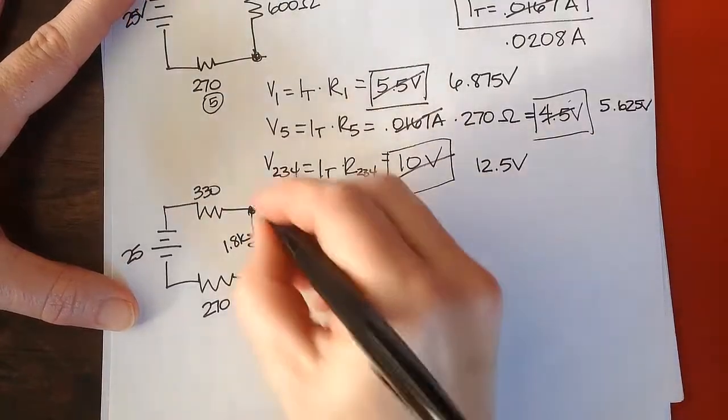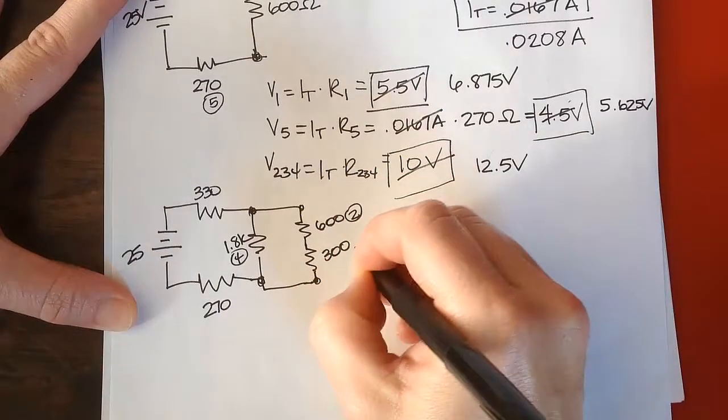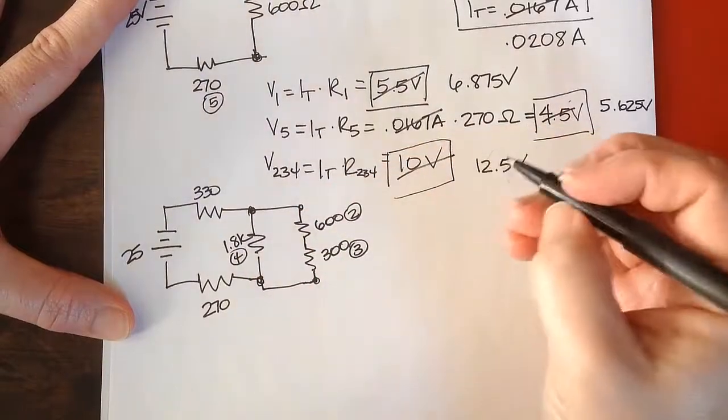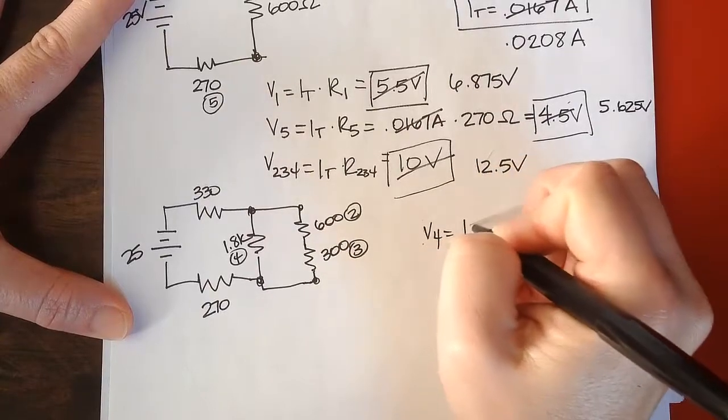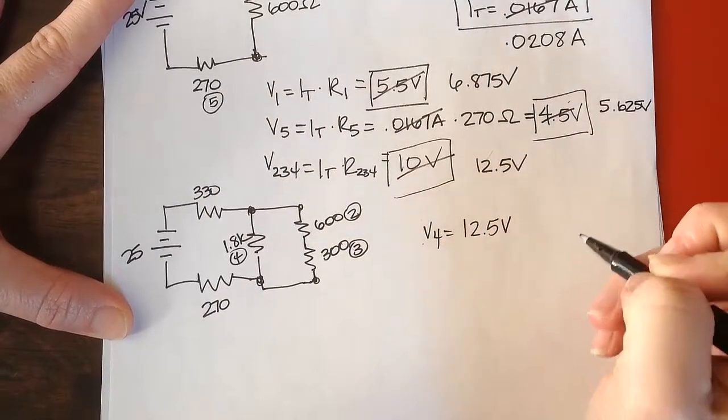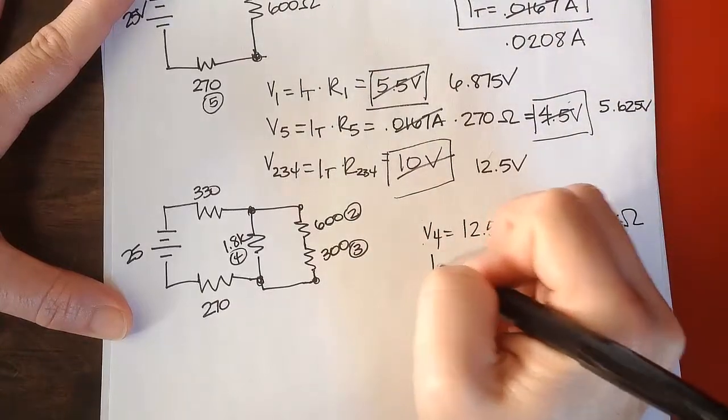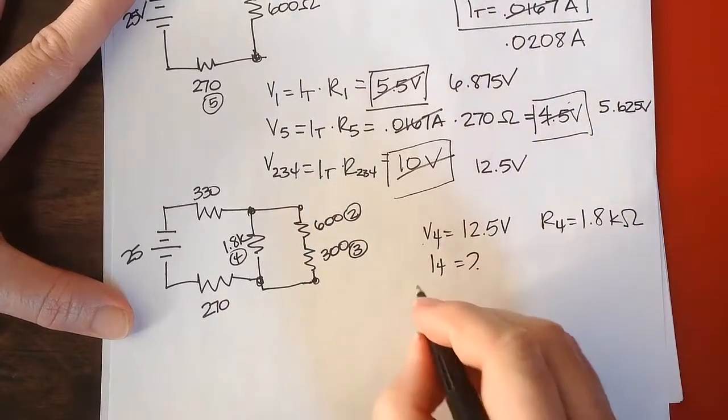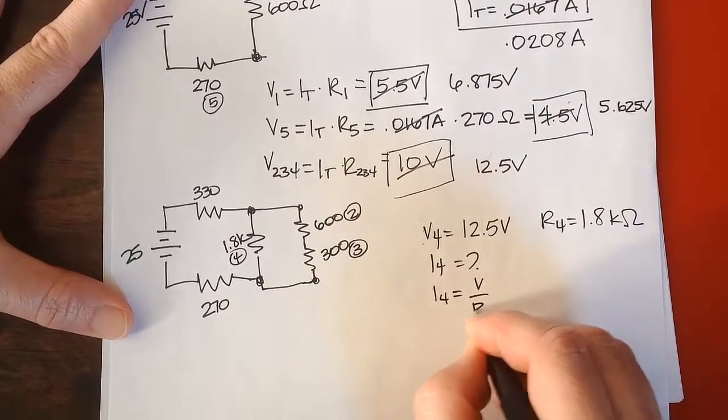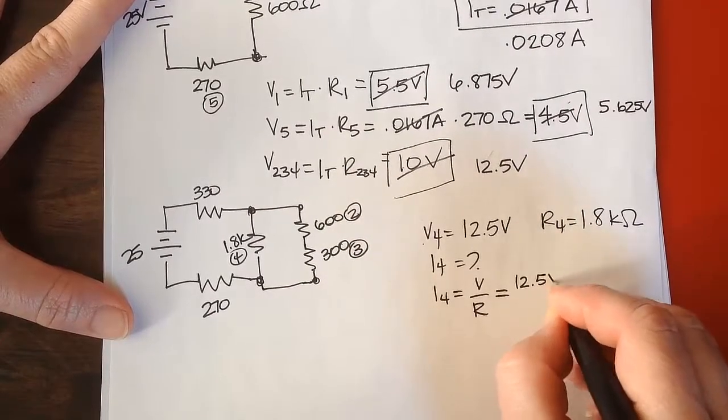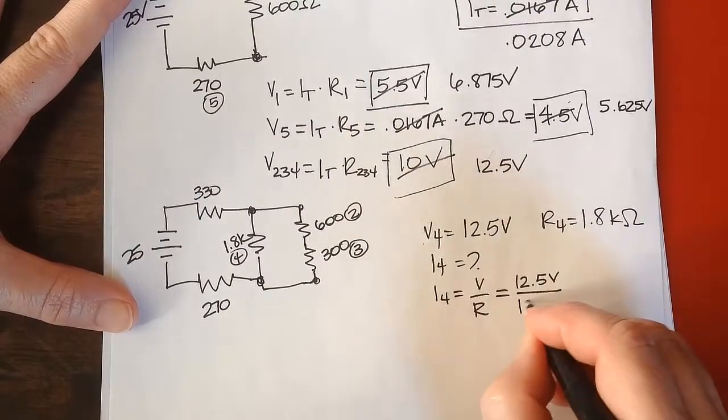So if I want to know, this was originally, I think, resistor 4, this was resistor 2, and this was resistor 3. If I want to know the current in each branch, I know that V4 was equal to 12.5 volts, right? And I know R4, so I can find I4.